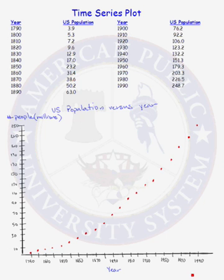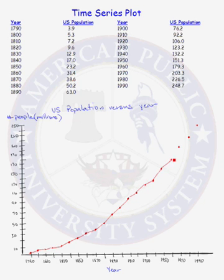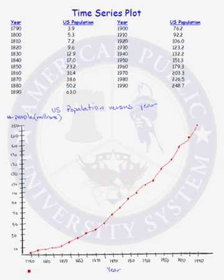The remaining data points have been plotted. The last thing we need to do is connect the data points, and our time series plot is complete. From our plot we clearly see that the U.S. population has grown each 10 years since 1790, and we can tell from the time series plot that this growth has not been linear.